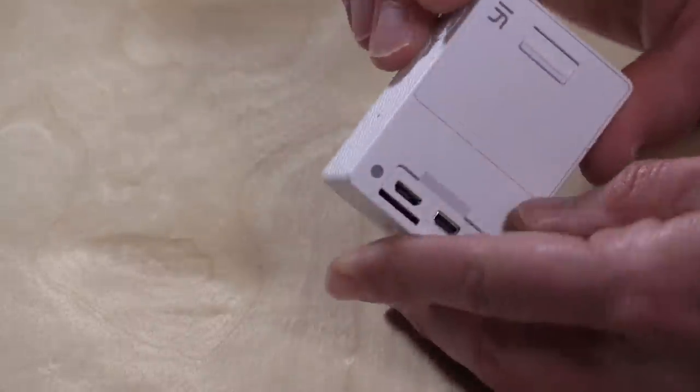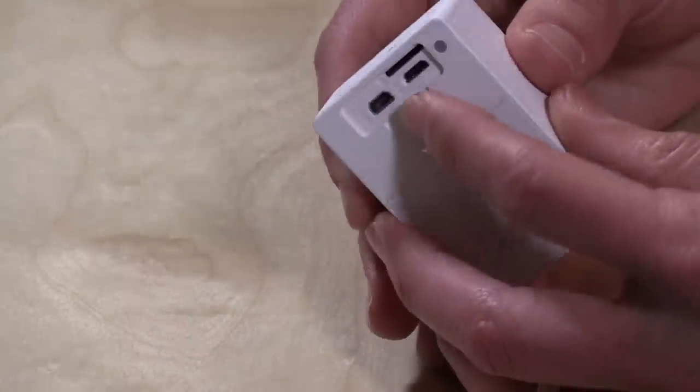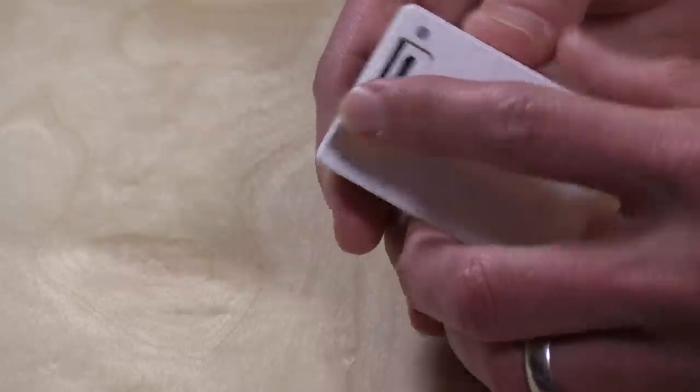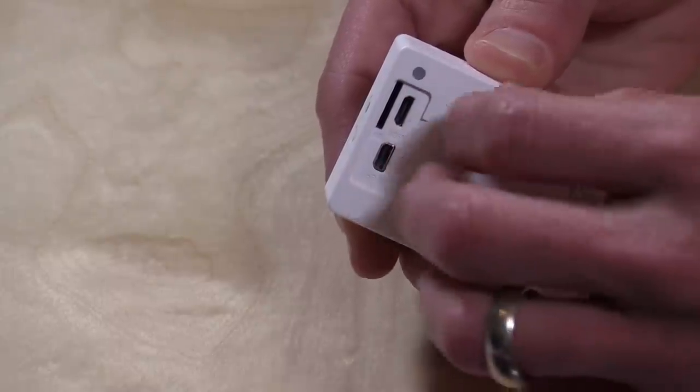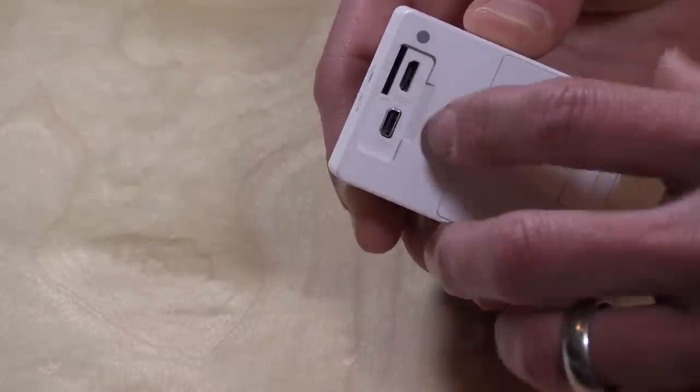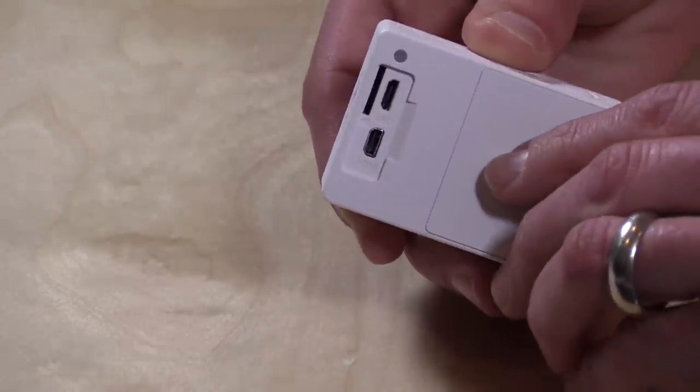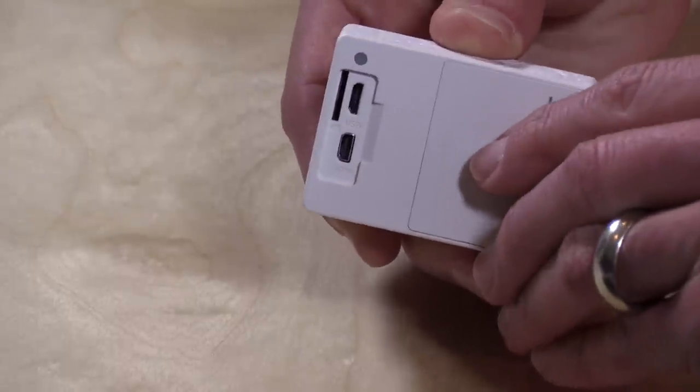On the top here is the shutter button to either start and stop recording or to take pictures. On the back, this is the one issue that I found with the overall hardware design: I already lost the door that goes over the memory card slot as well as the USB and HDMI ports here. I took it off and I lost it, I don't know where it went, I'll never find it again.